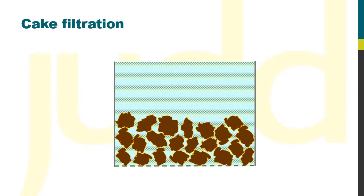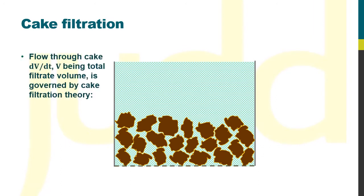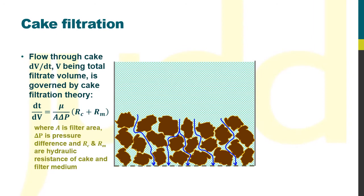For cake filtration theory, the key relationship is that between the pressure across the cake and the flow through it, expressed as the inverse averaged flow rate, dt by dV. And this is determined by the hydraulic resistances of the cake and the filter medium.